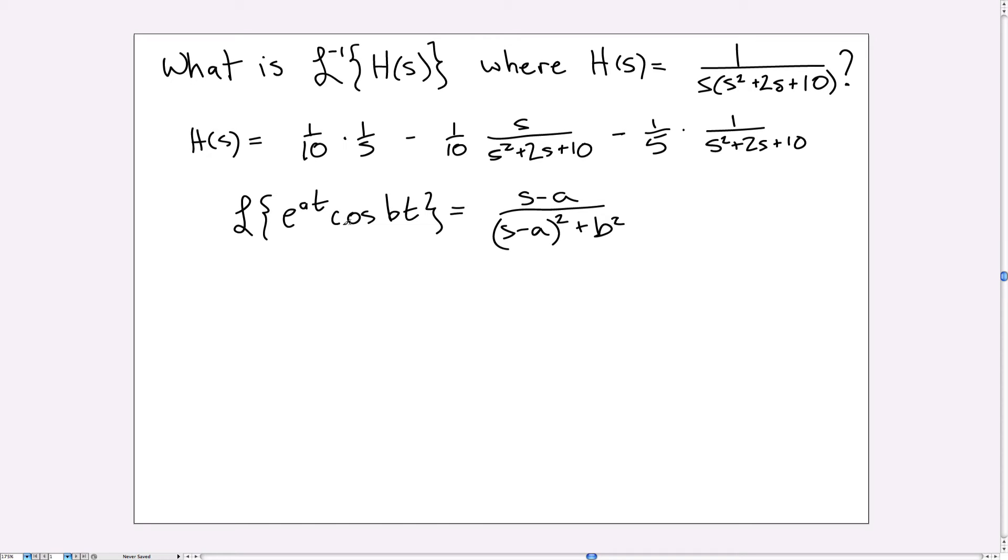Same thing for the transform of e to the at sine. The difference is that, well, let's put that down. So the transform of this guy will be similar, except that the numerator is just B.